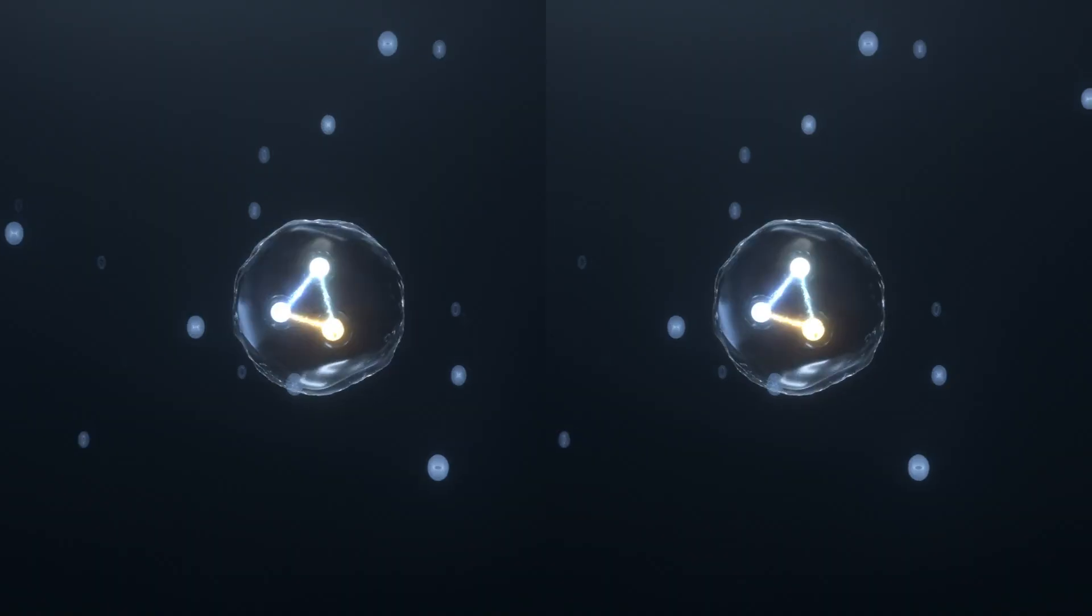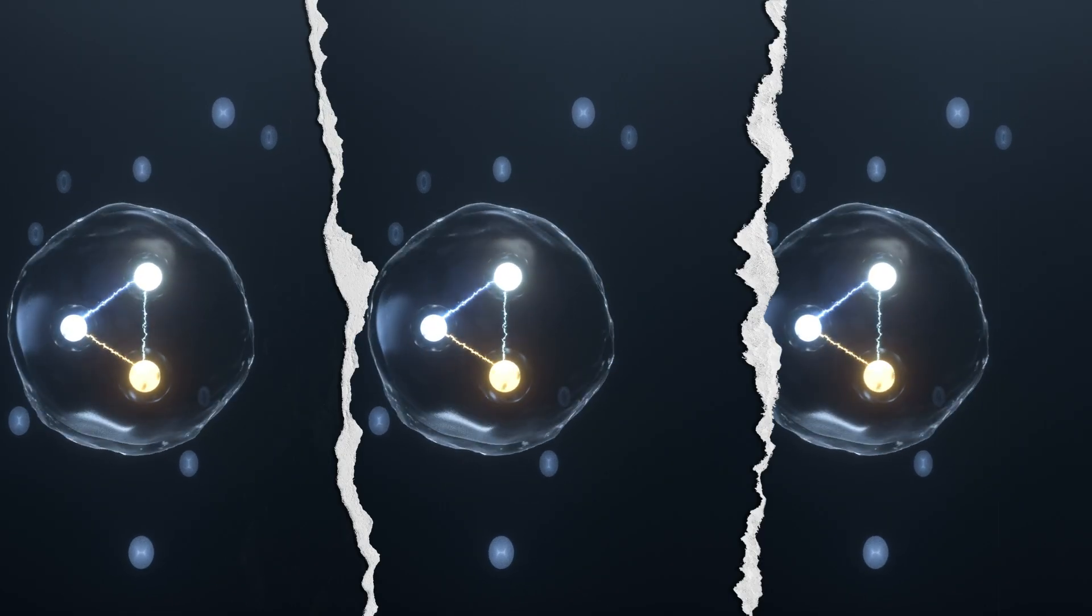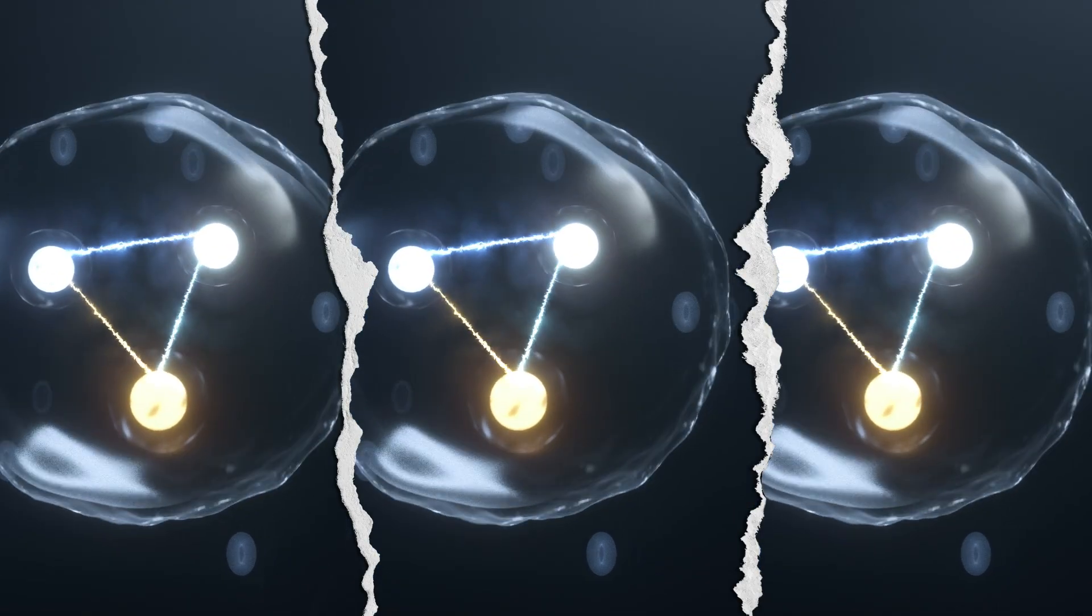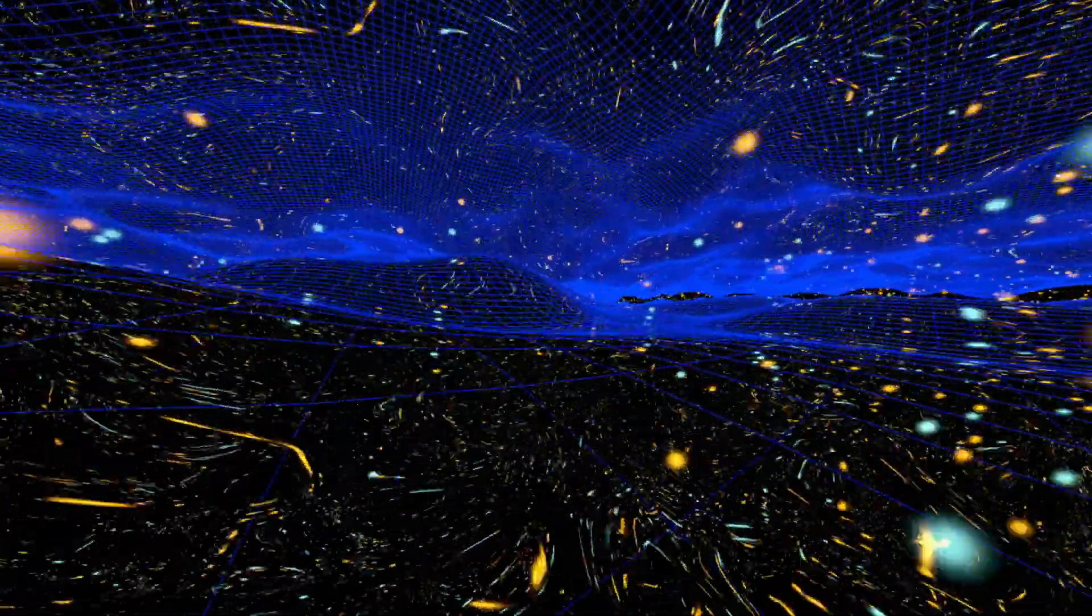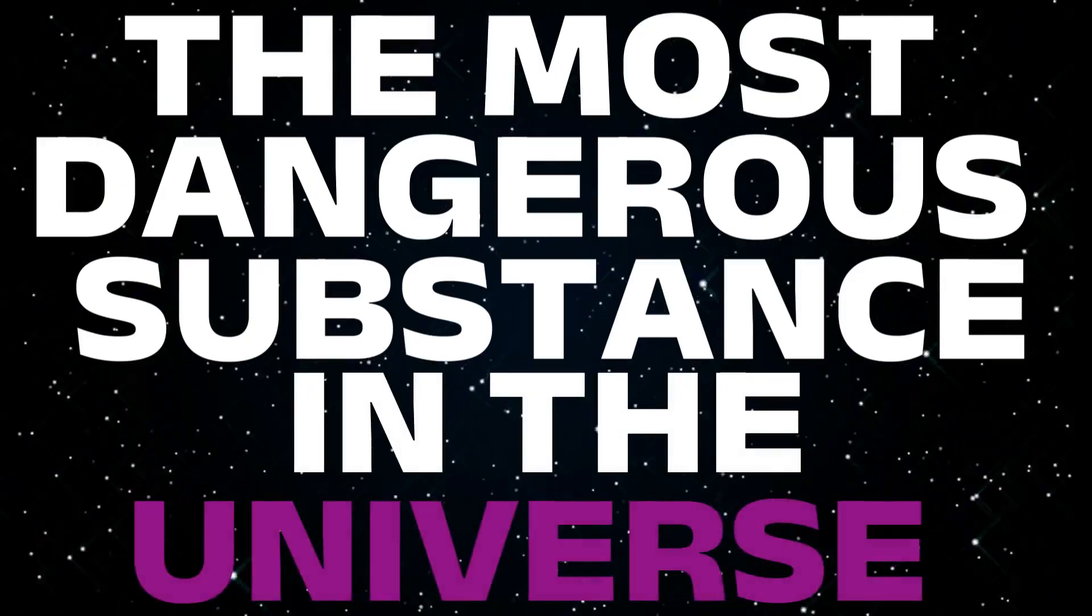It's made not just of up and down quarks, but of a third kind. Strange quarks, fuse together into what's known as strangelets. On paper, these fragments should be impossibly stable. So stable, that if one ever touched normal matter, it could convert it, atom by atom, into more strange matter. That's why theorists half-jokingly call it the most dangerous substance in the universe.